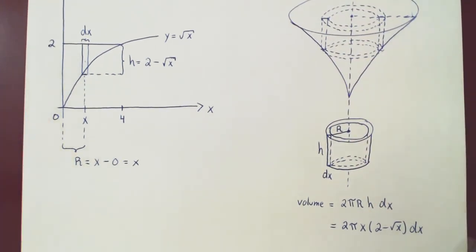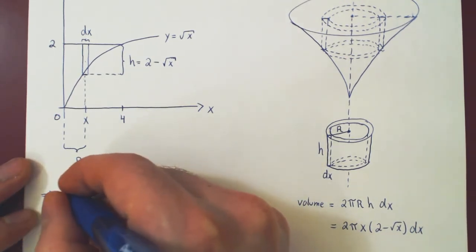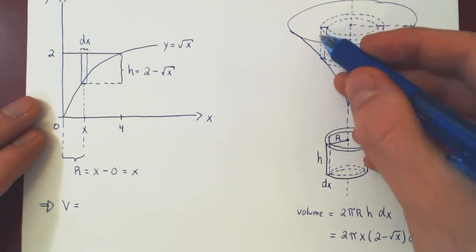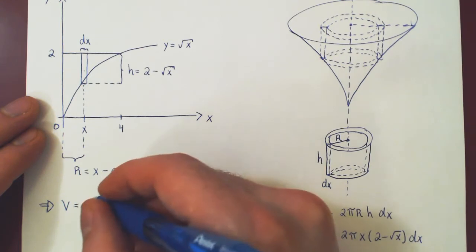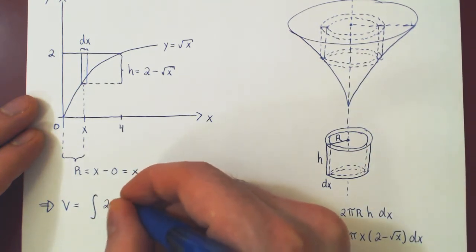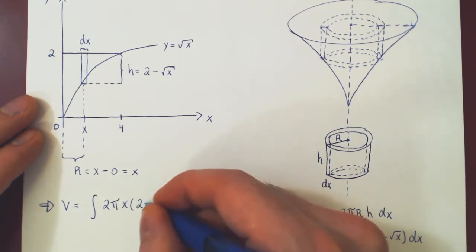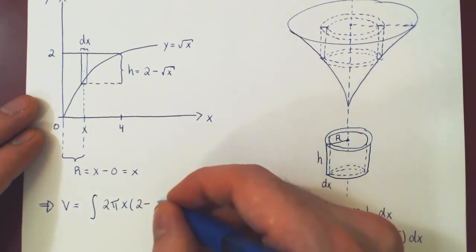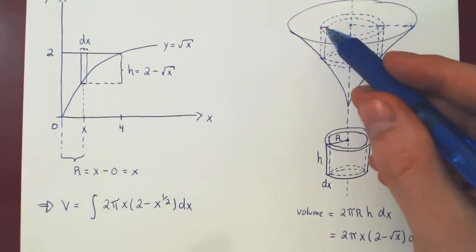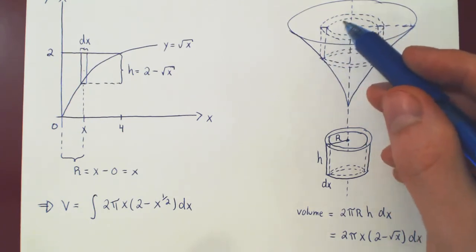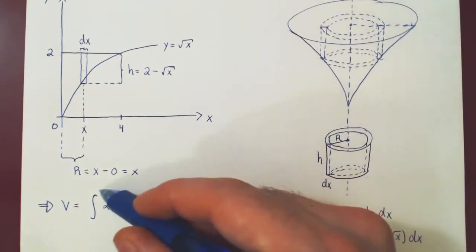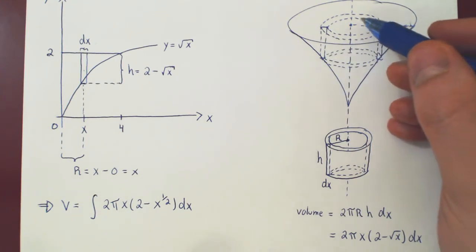The total volume of the solid of revolution is obtained by summing — integrating — the volume of all the little cylindrical shells within it. The volume of each shell is 2 pi x times (2 minus x to the one half) dx. The shells are generated by vertical rectangles along the x-axis, beginning at x equals 0 and going up to x equals 4. So we sum the volume of cylindrical shells as x ranges from 0 to 4.